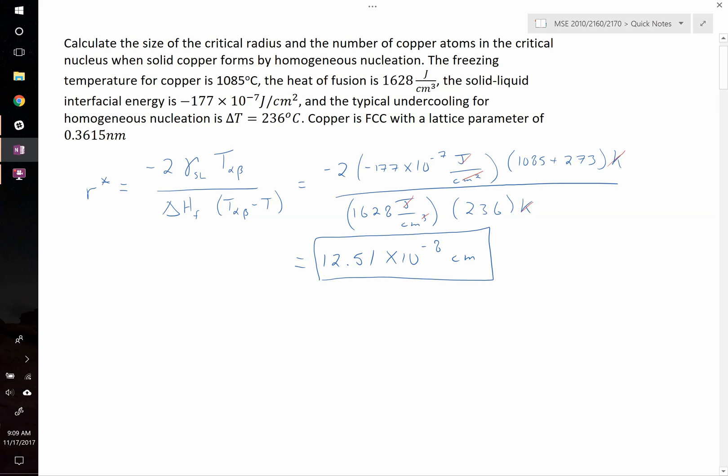Alright, how many copper atoms are in this nucleus? So to do that, we're going to need to do the following. We know the radius of the critical nucleus, so we need to turn that into a volume. And then we need to figure out how many copper atoms exist on a per volume basis. So first, let's figure out the volume of the critical radius.